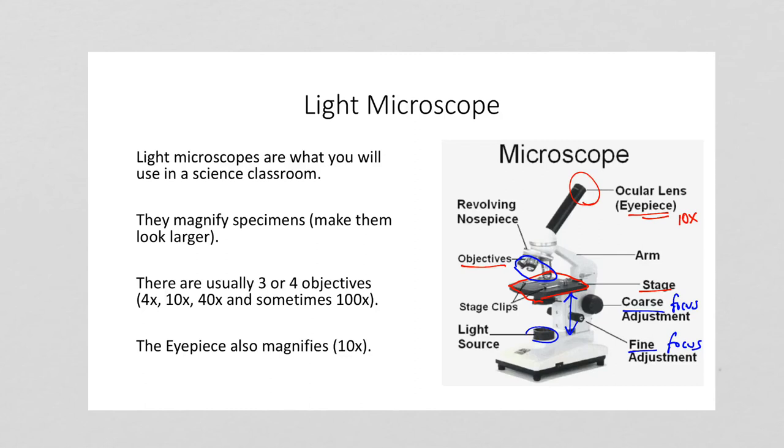Often one of them will be 4x magnification, one will be 10x magnification, and one will be 40x magnification. You can turn those using the revolving piece you see there so that you can change the magnification of a specimen as you're looking at it.